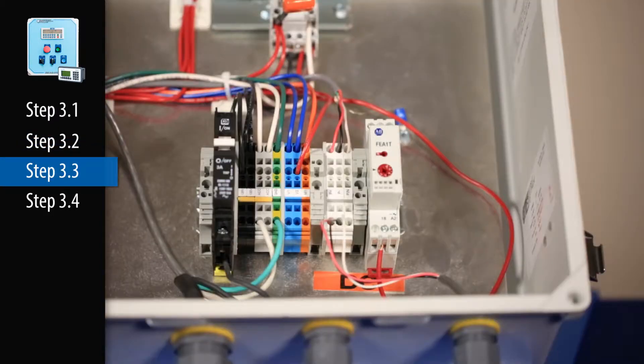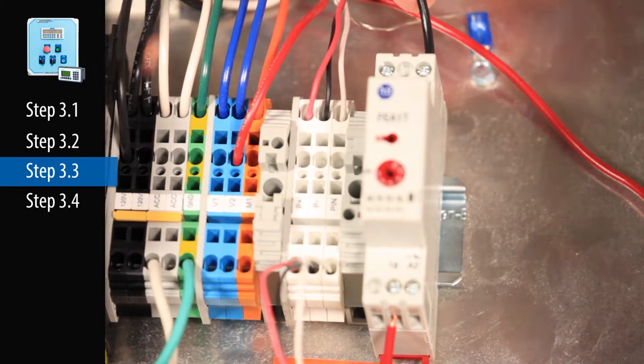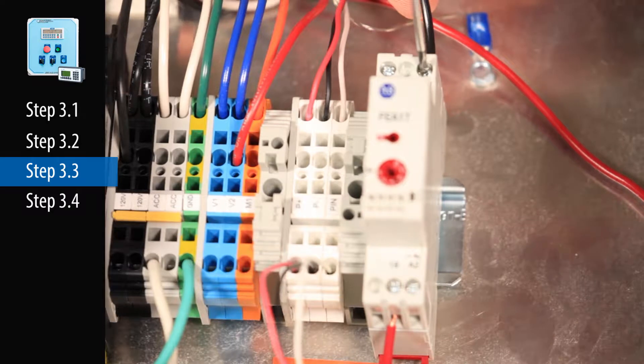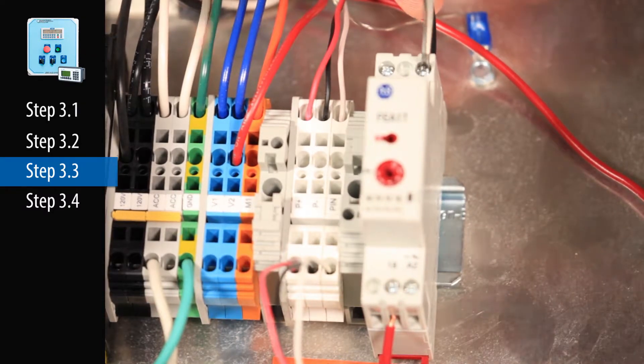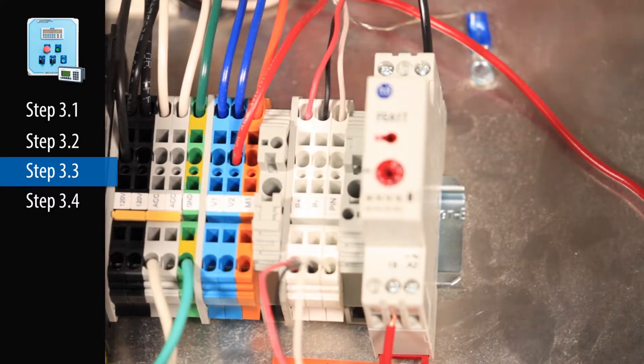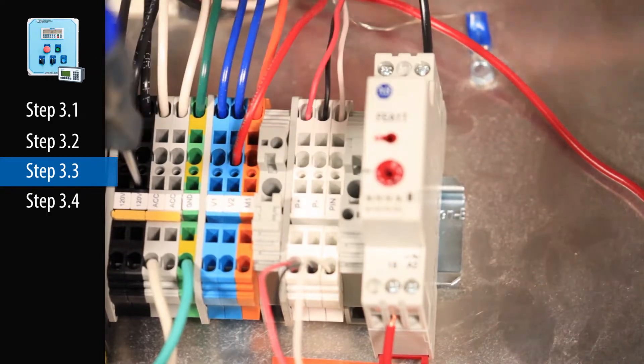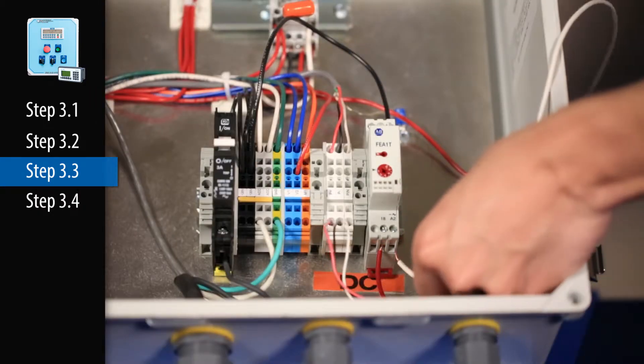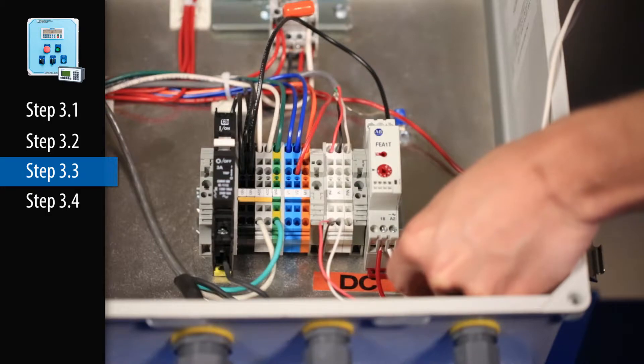Step 3.3. Connect 120 AC power to terminal 15 on the relay timer. If available, you can use the auxiliary terminal blocks on or near the incoming power. However, do not jump from the incoming power supplying the circuit breaker. Connect AC common, or neutral, to terminal A2 on the timer.